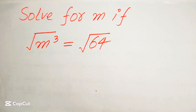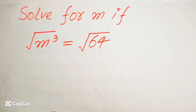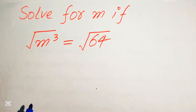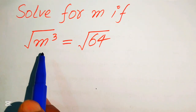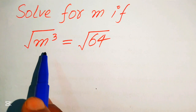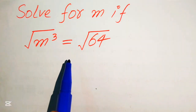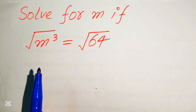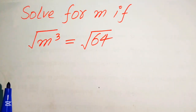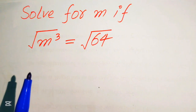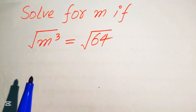Hi everyone, welcome to this nice math linear algebra problem. Here we have the square root of m cubed equals to the square root of 64, and we will solve this problem for the values of m.